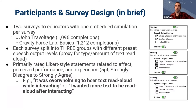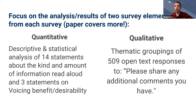We distributed two surveys to educators with one embedded simulation per survey — one with John Travoltage and one with Gravity Force Lab Basics. Each survey had over 1,000 respondents and was split into three groups with different preset speech output levels as a proxy for the type and amount of text read aloud: one with all alerts enabled, two with only alerts about changes outside of input focus, and three with only object names and on-screen text. Respondents rated Likert-style statements related to affect, perceived performance, and experience — such as 'It was overwhelming to hear text read aloud while interacting' or 'I wanted more text to be read aloud after interacting.' We focus on results from two survey elements: descriptive and statistical analysis of 14 statements about kind and amount of information, and three statements on voicing benefit and desirability, plus qualitative analysis of 509 open-text responses.